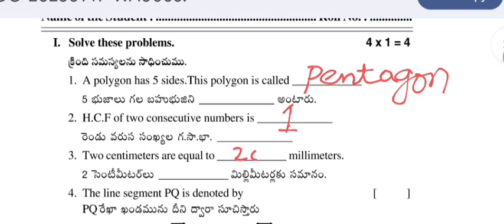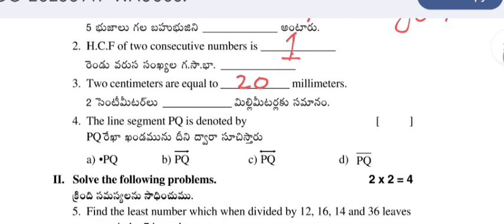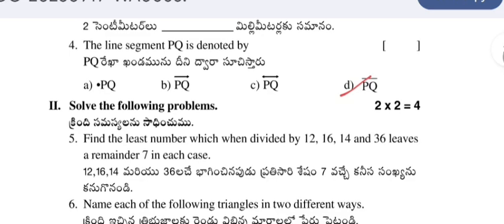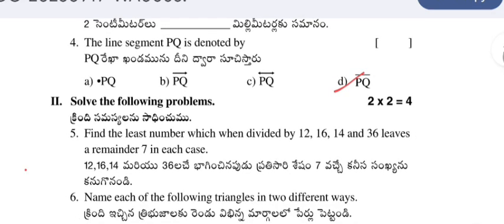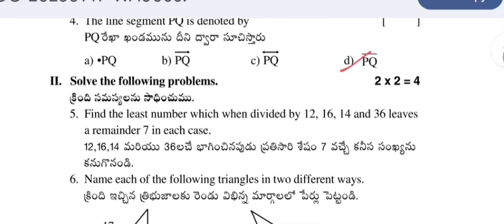The line segment PQ is denoted by without any arrow mark, only a bar should be written. That is D is the correct answer. Find the least number which when divided by 12, 16, 14 and 36 leaves a remainder 7 in each case.